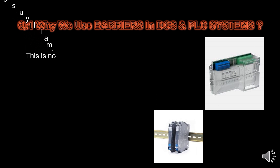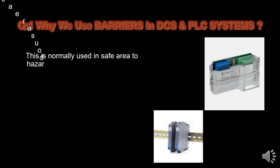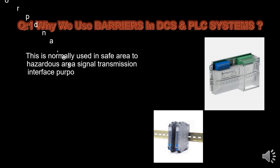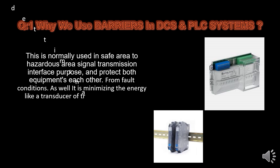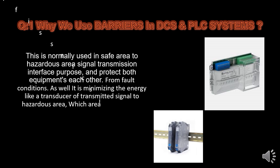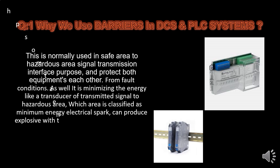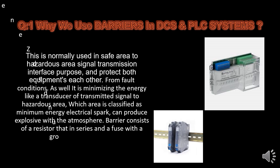Why do we use barriers in DCS and PLC systems? Barriers are normally used as a safe area to hazardous area signal transmission interface, and they protect both equipments from fault conditions. They also minimize the energy of transmitted signals to the hazardous area, which is classified such that minimum energy electrical sparks cannot produce an explosion. The barrier consists of a resistor in series and a fuse with a grounded center diode.